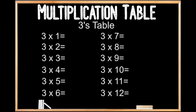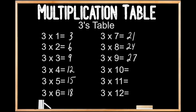3's table. 3 times 1 is 3. 3 times 2 is 6. 3 times 3 is 9. 3 times 4 is 24. 3 times 5 is 15. 3 times 6 is 18. 3 times 7 is 21. 3 times 8 is 24. 3 times 9 is 27. 3 times 10 is 30. 3 times 11 is 33. 3 times 12 is 36.